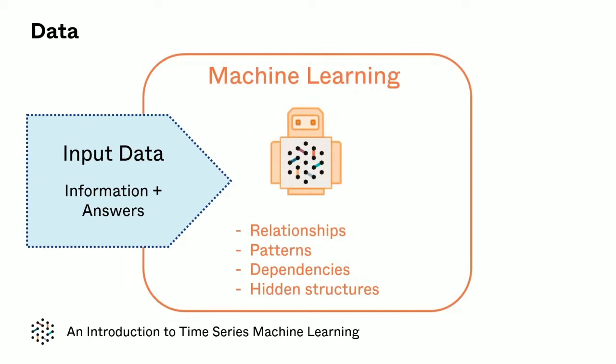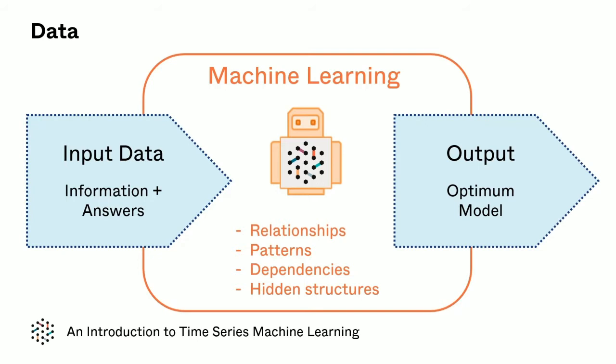First up we have the input data. It is the most important aspect of any model. This is true to an even greater extent for machine learning because data plays a primary role in the modeling process.